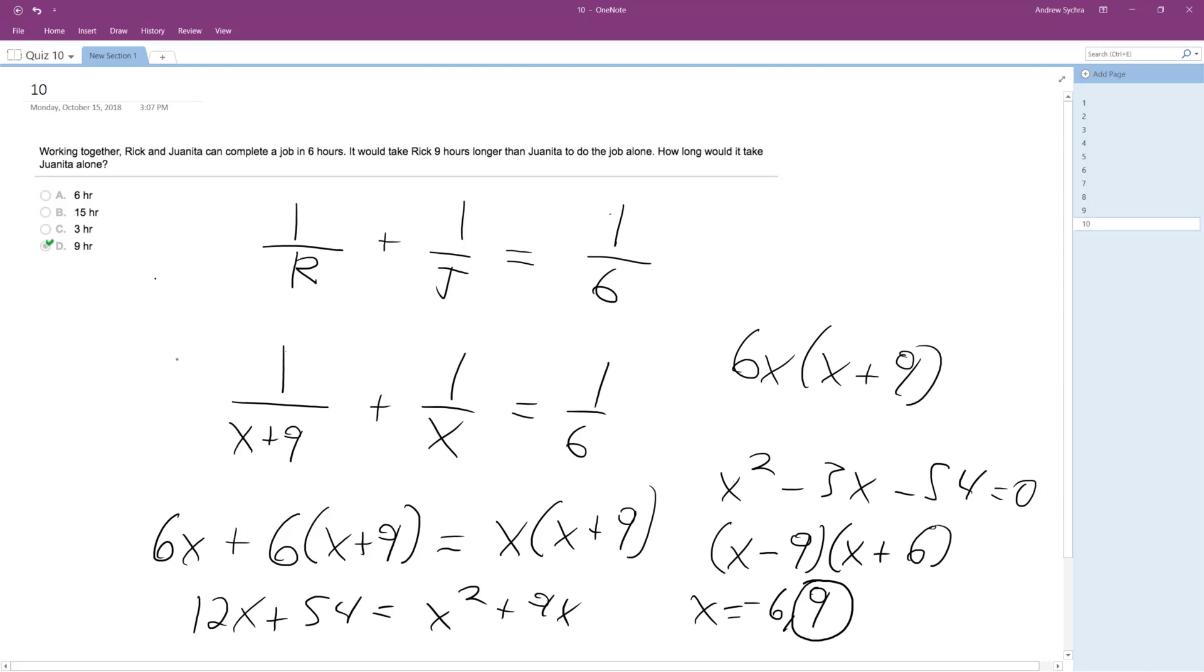And we can try this out. So if we plug into the original equation, one over 18 plus one over nine, this ends up being one over 18 plus two over 18, which equals three over 18, which reduces down to one over six. So it's correct.